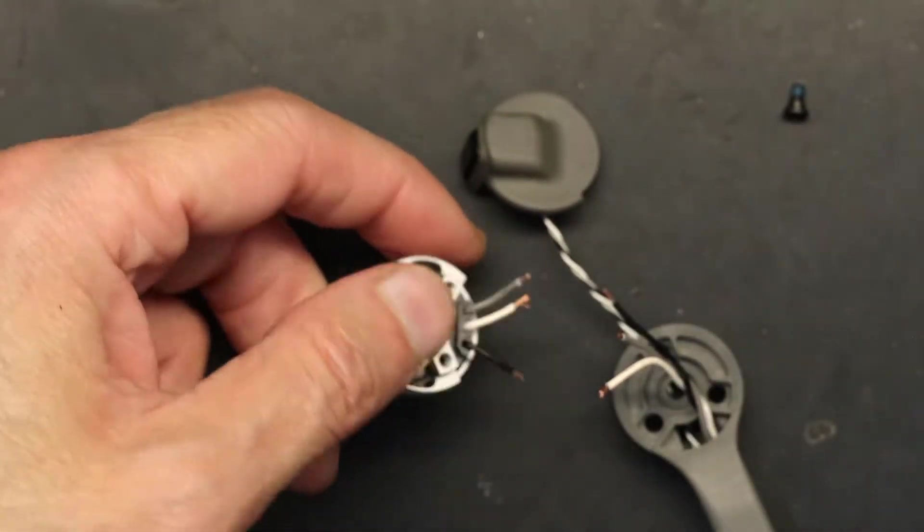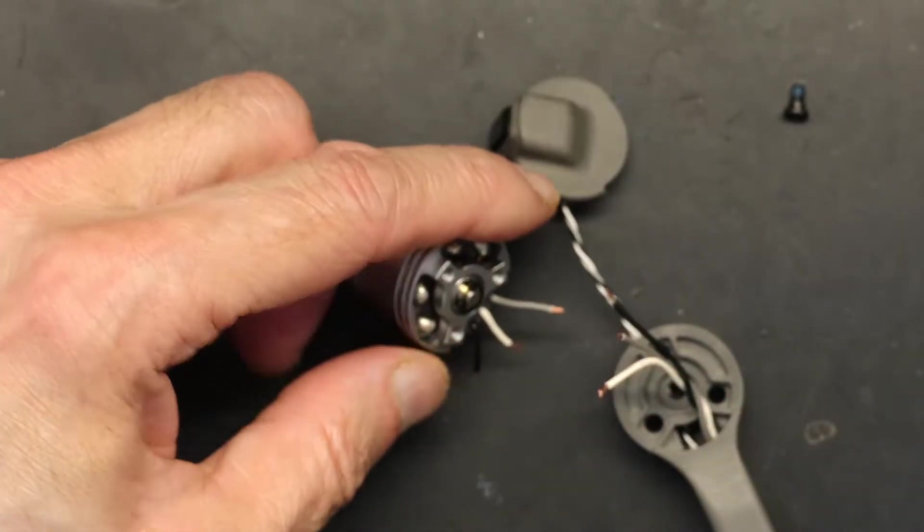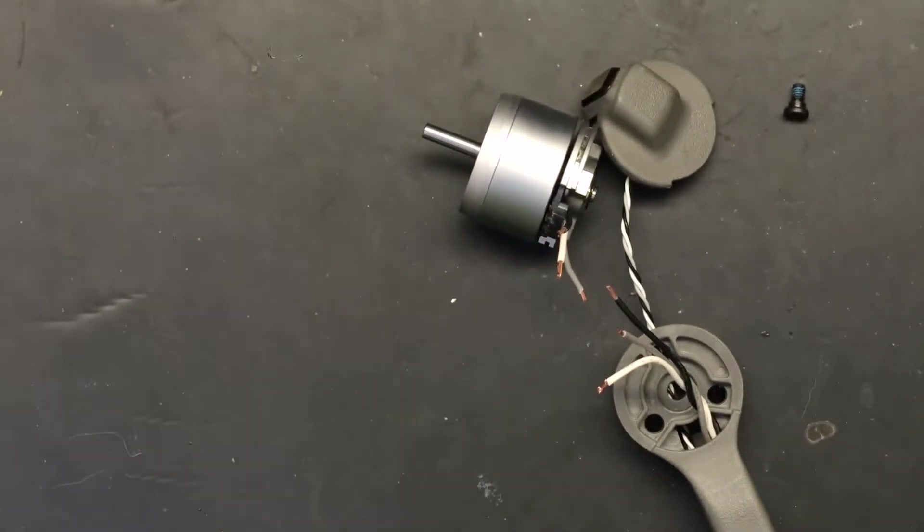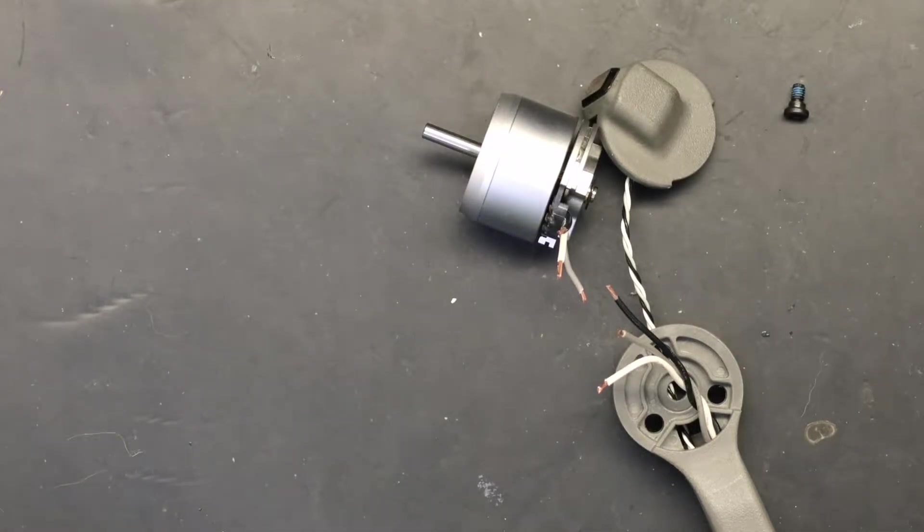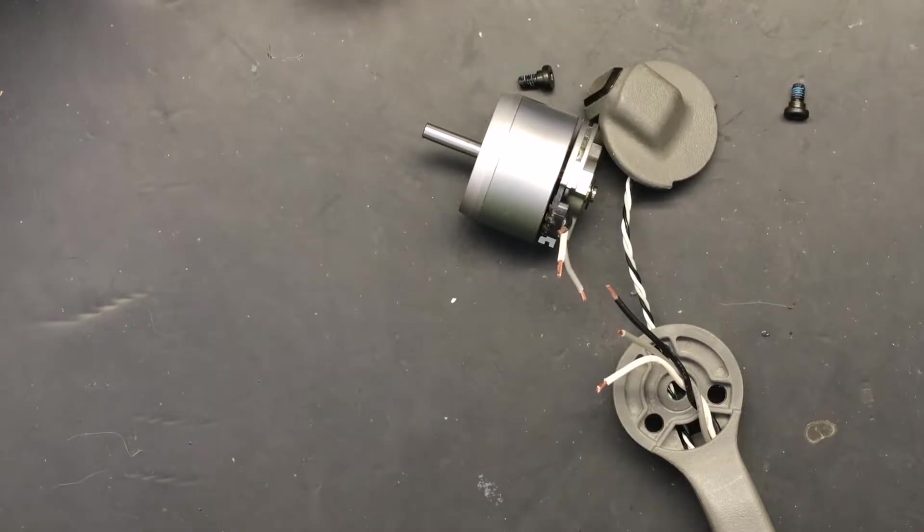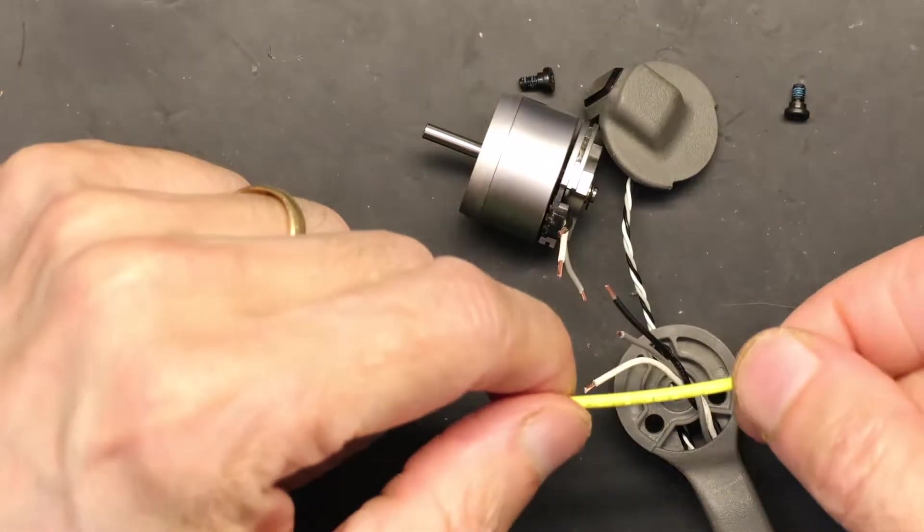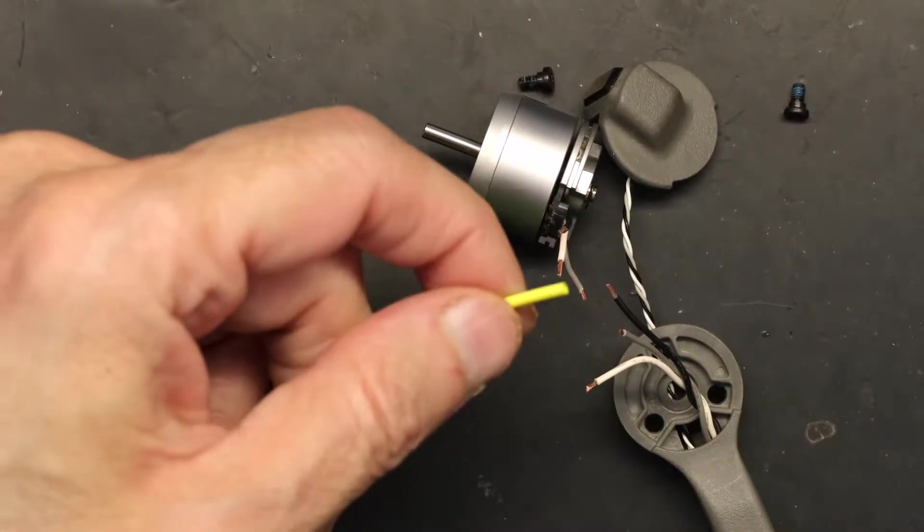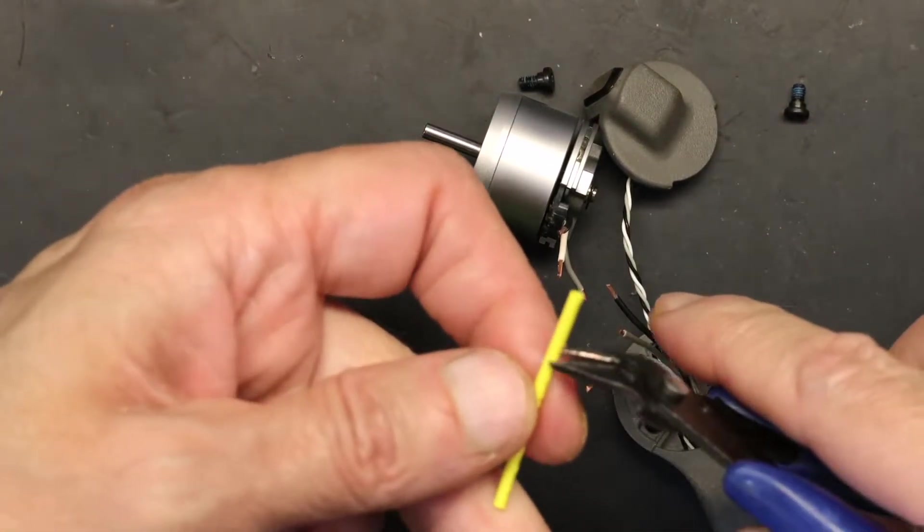Now what we need to do is we need three pieces of heat shrink, small heat shrink. I will be using yellow color like this and I'm gonna cut it in three small pieces.